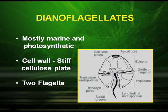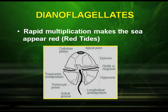Dinoflagellates are mostly marine and photosynthetic. Their cell wall has a stiff cellulose plate and they have two flagella. Rapid multiplication makes the sea appear red, which is referred to as red tides. At times they multiply rapidly and make the sea toxic, making the survival of other marine animals very difficult.